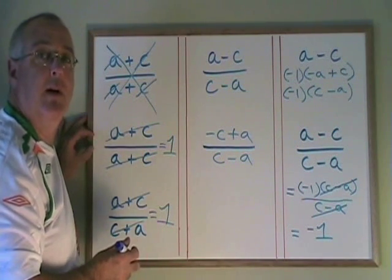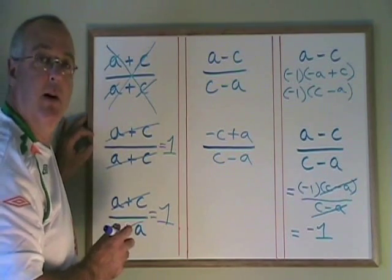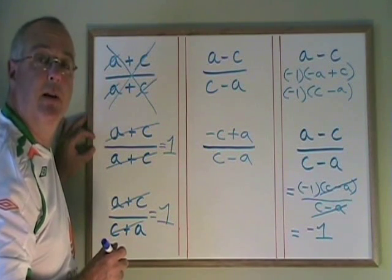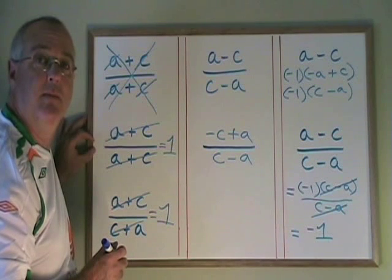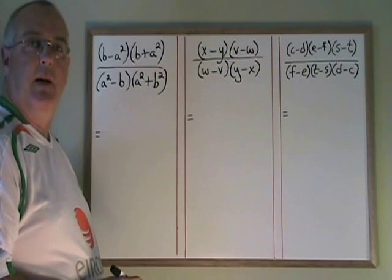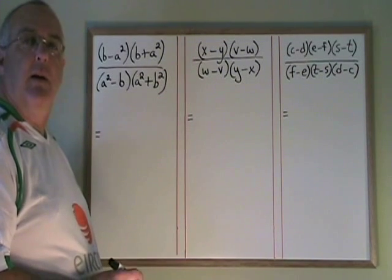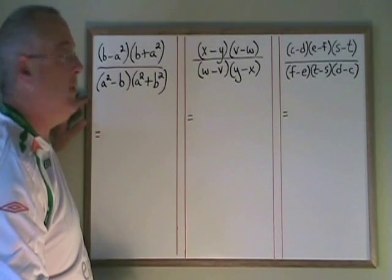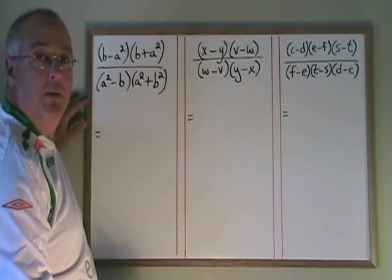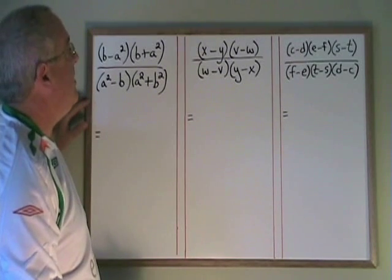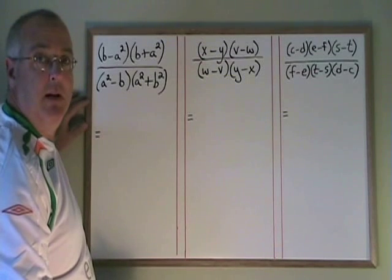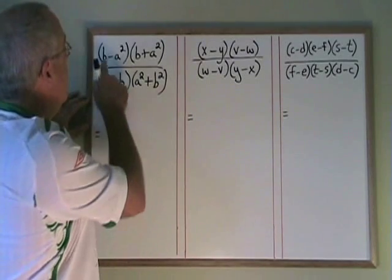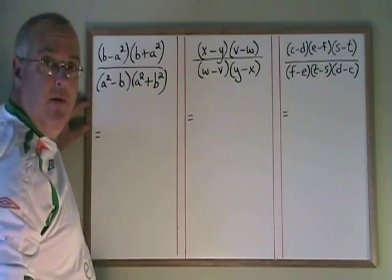The minus 1 trick is extremely useful when working with algebraic fractions because it provides you with a lot of cancelling opportunities and allows you to more fully simplify your expression. Now let's use the minus 1 trick in a few examples. In the first example, I have b minus a squared on the top and a squared minus b on the bottom. I also have b plus a squared on the top and a squared plus b squared on the bottom. The only opportunity to use the minus 1 trick is with these two on the left — they are the reverse of each other.